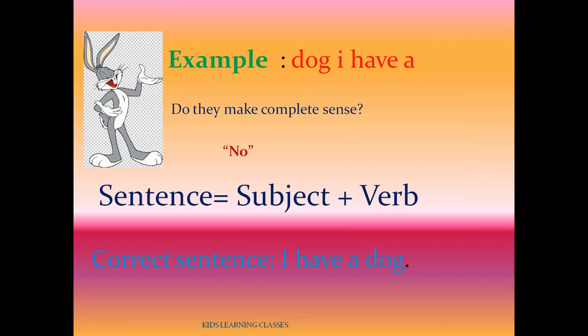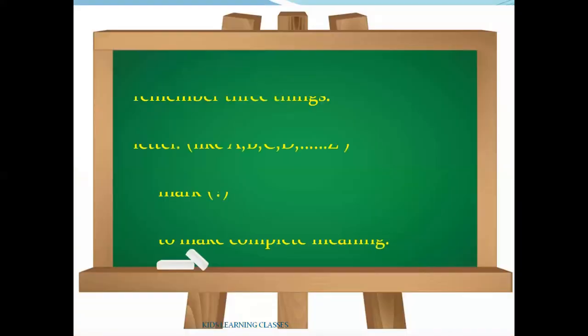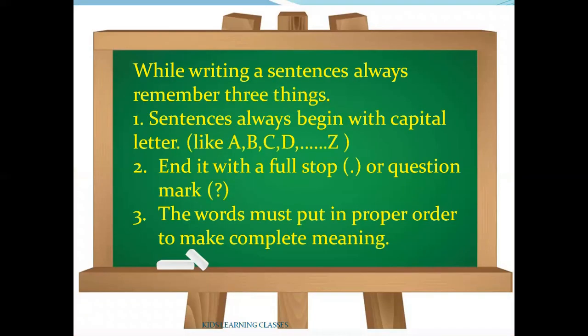The correct sentence of the above example is written as 'I have a dog.' Here, 'I' is capital and it ends with a full stop. While writing any sentence, we should remember these three things.